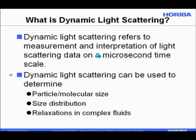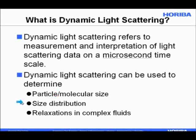Dynamic light scattering is a rich field and can be used in a variety of ways. The most common are to find particle and molecular size — you can really reach down to quite small sizes, corresponding to large molecules, in addition to quite small particles, and learn a little bit about size distribution. There is also a more arcane topic where you can probe the behavior of complex fluids. Today I will talk about finding particle and molecular size, primarily.